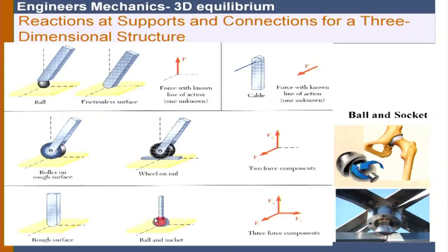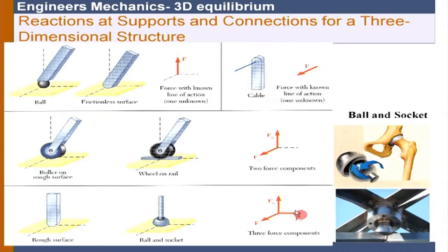Next is the ball-and-socket joint — a very common example is the hip joint (femur system). In a ball-and-socket joint, it can rotate about any axis, but translational motion is not allowed. Therefore, translational motion is prevented in all three directions, giving three support reactions (three force unknowns).